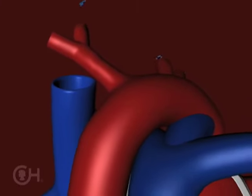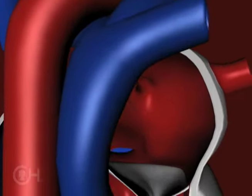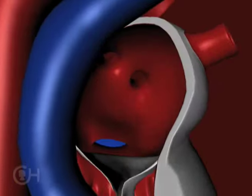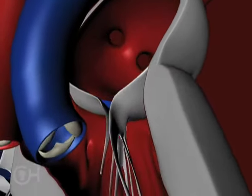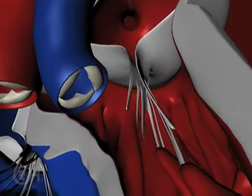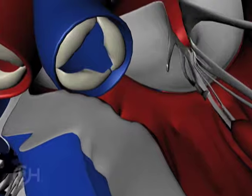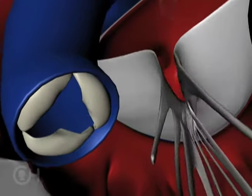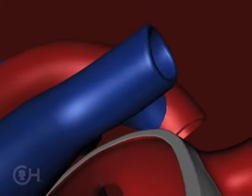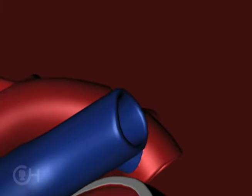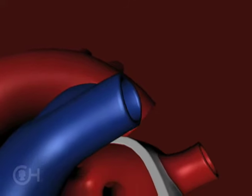Oxygenated blood from the lungs then returns to the left side of the heart, comes from the left side of the heart out to the pulmonary artery, and goes to the lungs in a separate circulation. This creates what we call a parallel circulation.